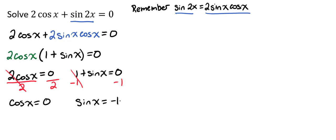So we want to know where does the cosine of x equal 0 and where does the sine of x equal negative 1. Looking at a unit circle could be really helpful here.